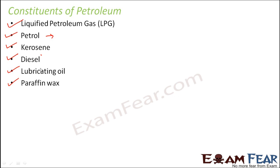We can then use these components in different ways. For example, petrol is used as a motor fuel. Diesel is also used as a motor fuel. Kerosene is used for lighting lamps. Lubricating oil is used for lubrication to smoothen the surfaces in machineries. Paraffin wax is used for making candles and many other products. But petroleum or crude oil as such is not of much use to us, so the process of refining petroleum is extremely important.